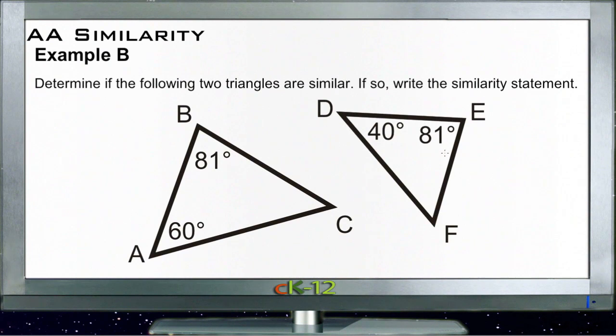For our second example, just like the last question we need to find the missing angle. We know that we have a 60 degree and an 81 degree here, so we have 60 plus 81 plus something equals 180. So that's 141 plus X equals 180.